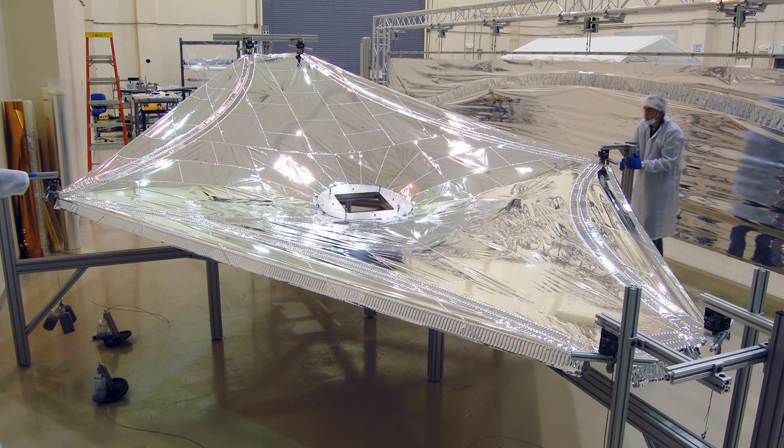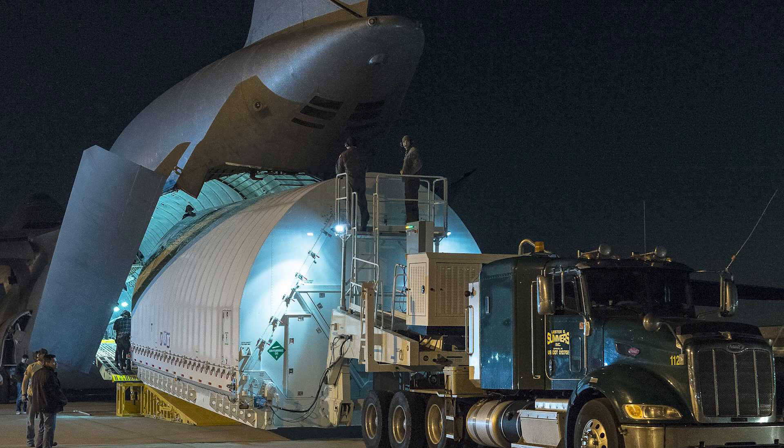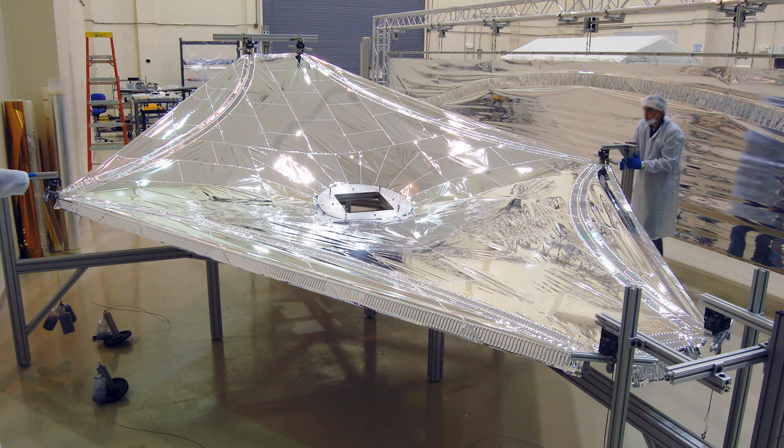The sun shield was actually built almost entirely by hand in Huntsville, Alabama, before being delivered to Northrop Grumman Redondo Beach. And in 2018, the sun shield was accidentally torn during testing, causing a fairly serious delay to the entire project.